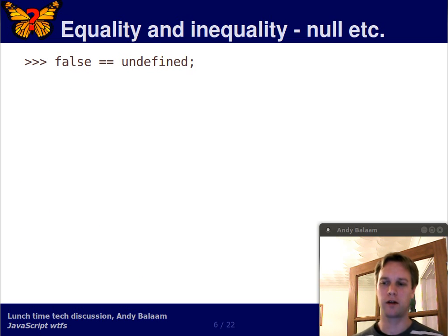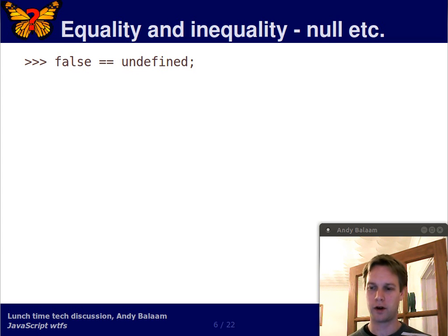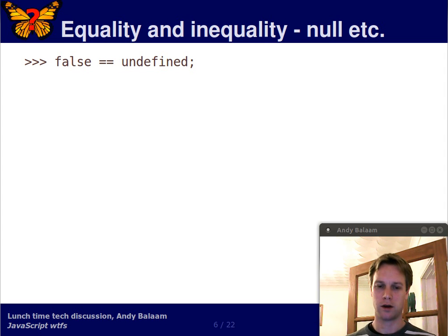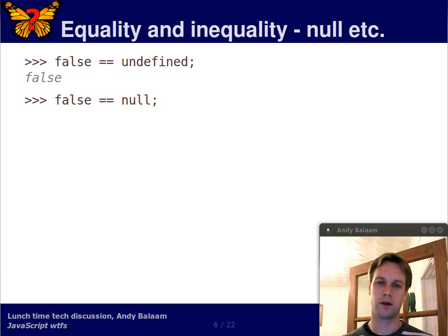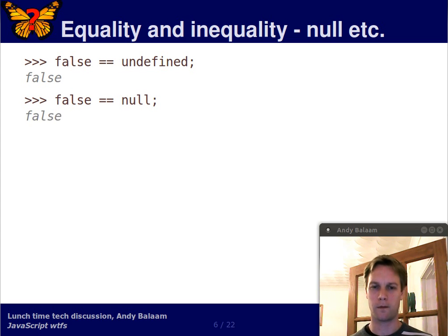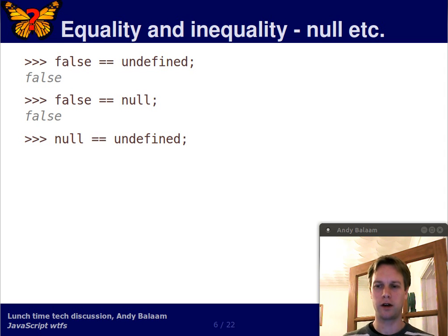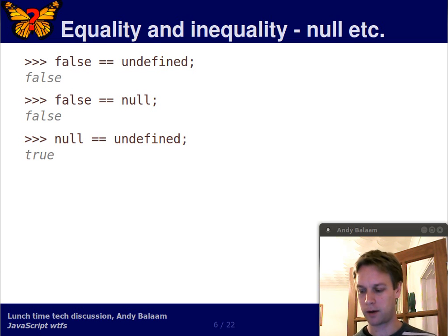Is false the same thing as undefined, or equal to undefined according to the double equal operator? Well, false is a boolean value. Undefined is a special thing in JavaScript — the recent standard has turned it into something that's unknown, maybe even a keyword. Is false the same thing as undefined? No. Is false equal to null using the double equal operator? No. Is null equal to undefined? Yes — according to the double equal operator, null is equal to undefined.